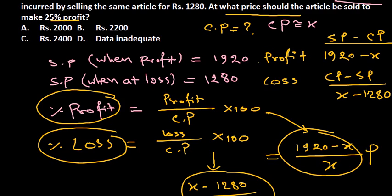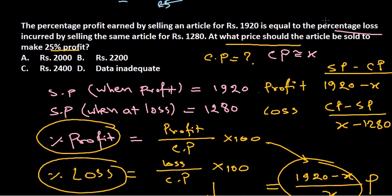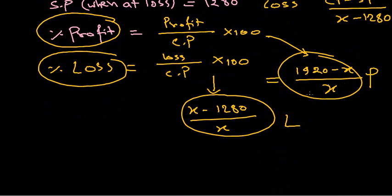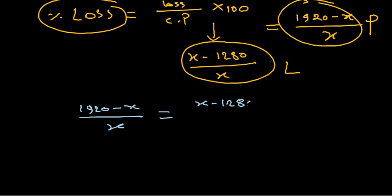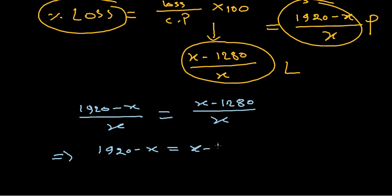The question tells us that the percentage profit equals the percentage loss. So we set them equal to each other: (1920 minus X) divided by X equals (X minus 1280) divided by X. Since X appears in the denominator on both sides, we can multiply both sides by X, which cancels out, giving us: 1920 minus X equals X minus 1280.